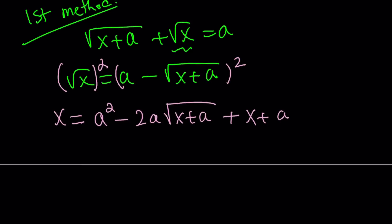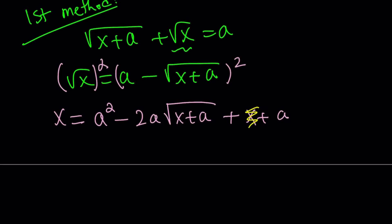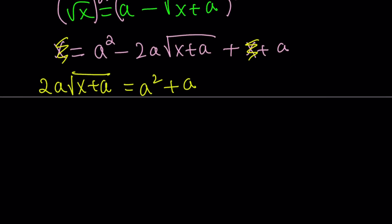So we can cancel out some of the terms here. Go ahead and get rid of x and you'll end up with 0. And I'm going to bring the radical over to the left-hand side so it becomes positive. And then this gives us a squared plus a on the right-hand side. And we can now go ahead and divide both sides by 2a. I should have used b so I can say 2b. I know some people don't like that because I'm probably overdoing it.